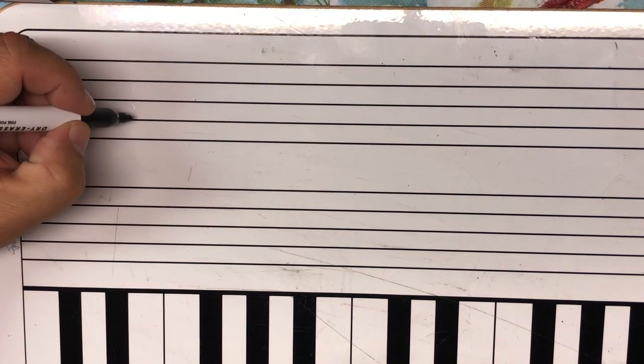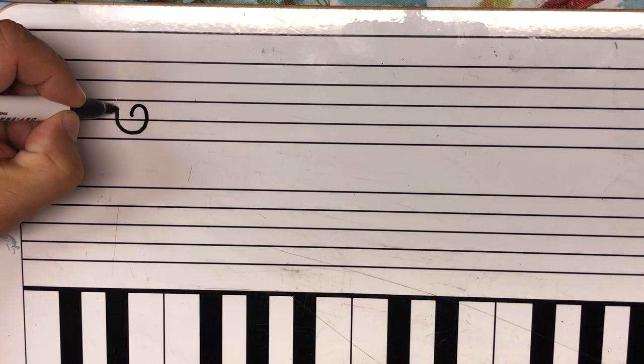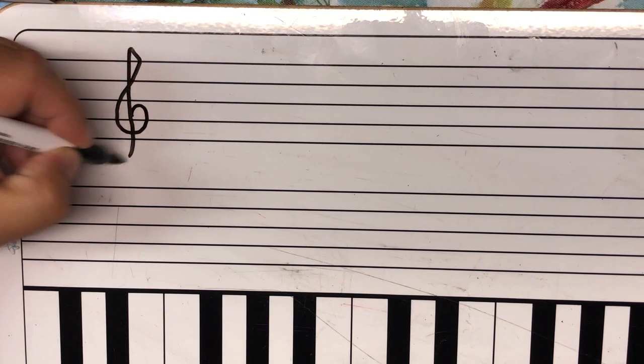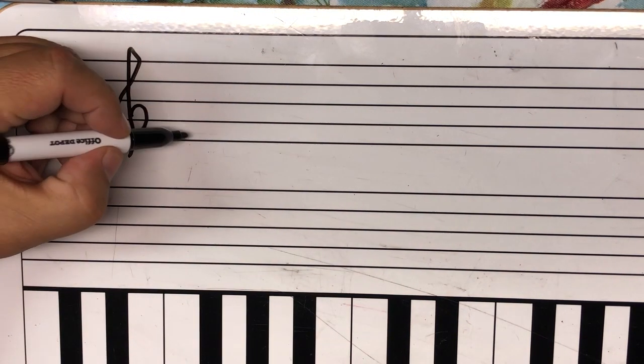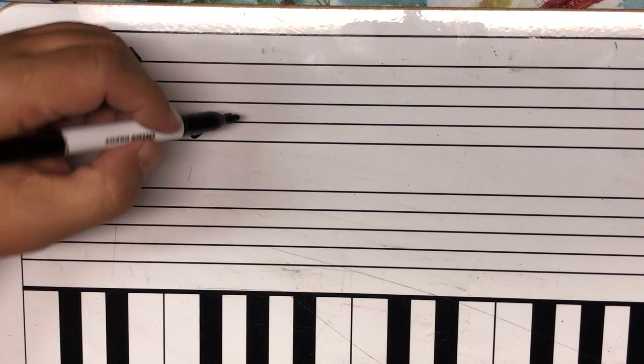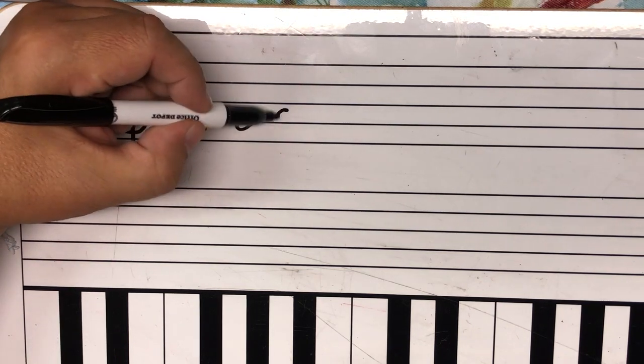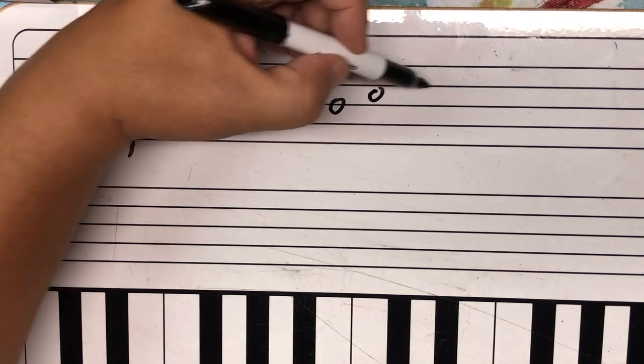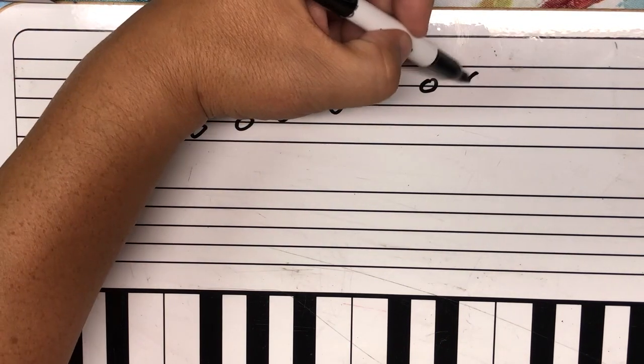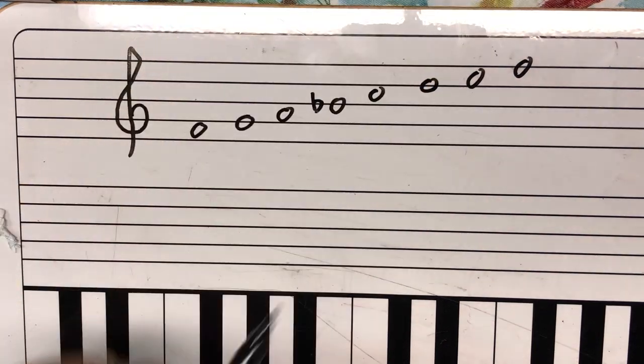So I'm just gonna write myself a treble clef here, spiral around, come up, come down. And I'm gonna write myself an F major scale. So that's got one flat, B flat, F, G, A, B flat, C, F, G, A, B flat, C, D, E, and F again.